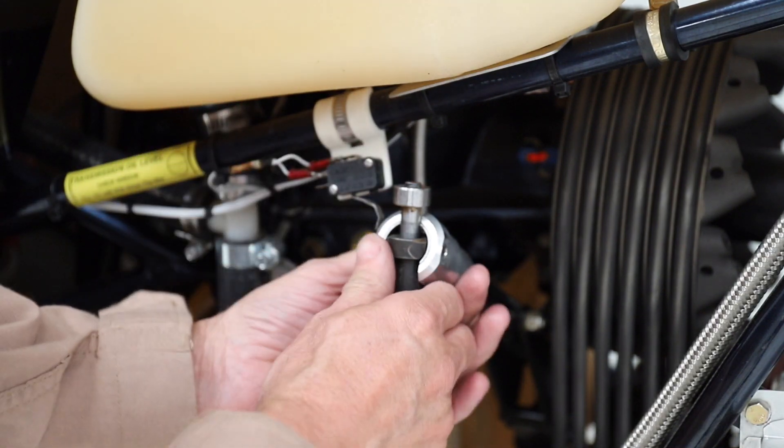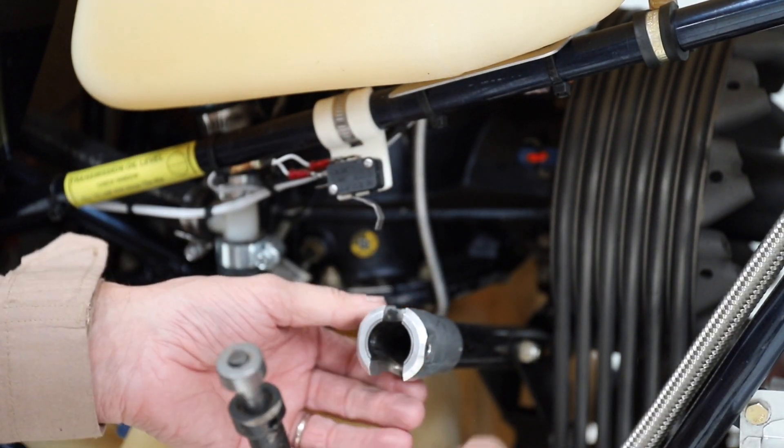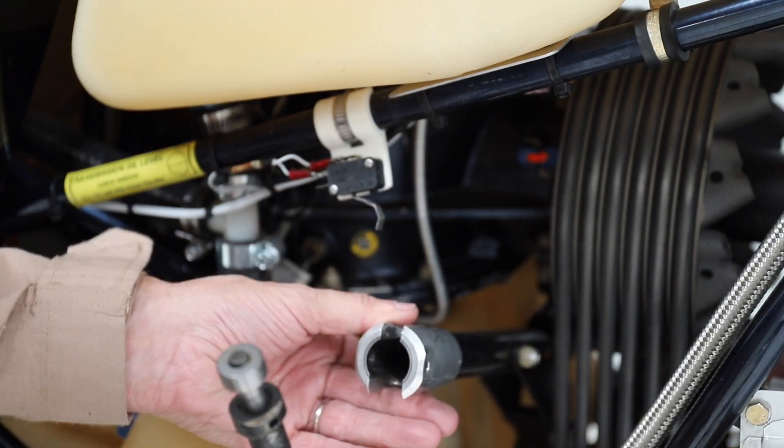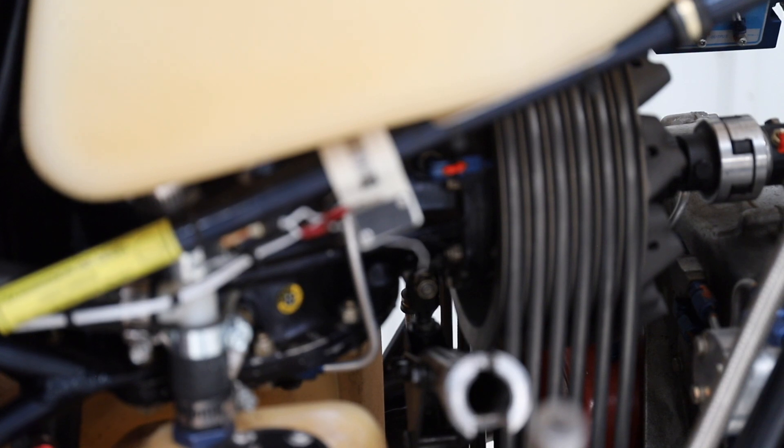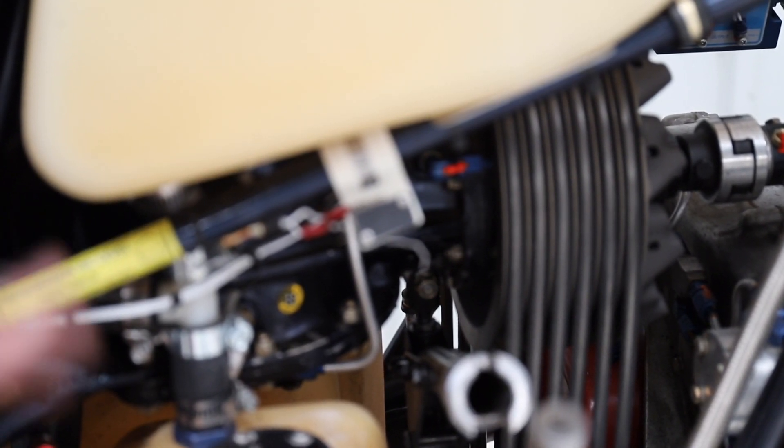The clutch now can be disengaged from the actuator arm, and you can see how the engine moved. So now that we have the clutch arm disengaged, we can go ahead and remove the bolt that secures it to the transmission.